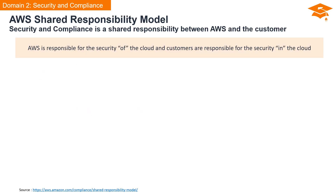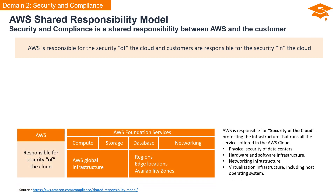The AWS Shared Responsibility Model defines the division of responsibilities between AWS and its customers in the context of security and compliance. AWS is responsible for the security of the cloud. This includes the global infrastructure — regions, availability zones, edge locations — and the infrastructure software that powers services such as compute, storage, databases, and networking.